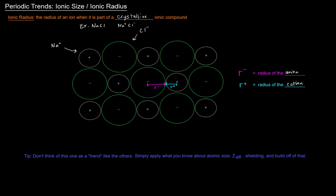So really nothing, not really different from atomic radius, it's just that now we're not talking about just the neutral atoms, we're talking about ions that are charged, right? So like I said, you don't want to think of this as a sort of trend, like we did with the others. Simply apply what you know about atomic size, right? The fact that it increases going to the left and down. And also keep in mind things about the effect of nuclear charge, as well as shielding and build off of that when you go through this.